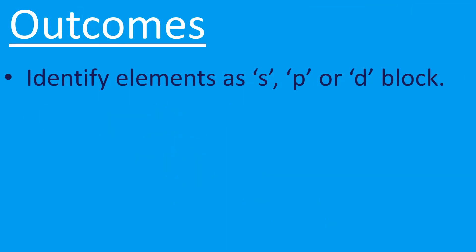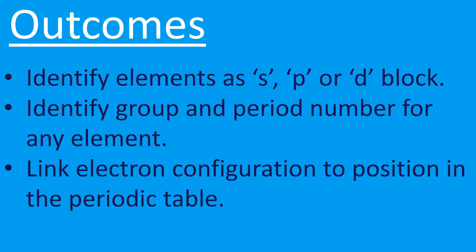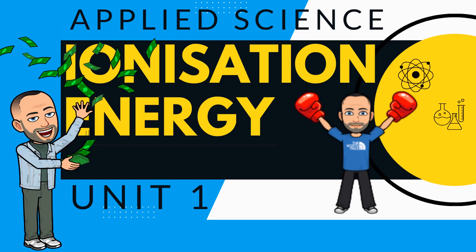So not only can you identify elements as s, p, or d block, you're now in a position where you can identify the group and period number for any element given a periodic table. And if you are given the electron configuration, you can use that to identify the position in the periodic table in terms of group and period number. That's the end of this video — thanks for watching, and look out for the next one on ionization energy.